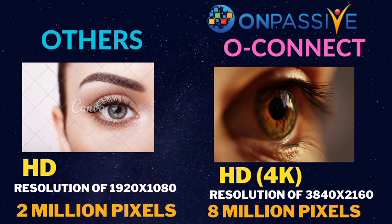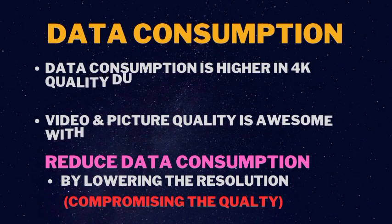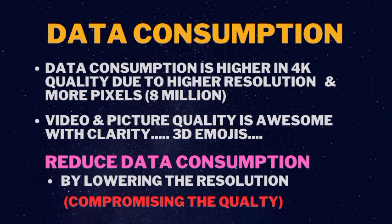Now, we'll talk about the data consumption. Data consumption is higher in 4K quality due to higher resolution and more pixels — 8 million. Moreover, OnPassive video and picture quality is awesome with clarity because of this resolution and number of pixels. And OConnect is using 3D emojis and many more features. That's why data consumption is more. And how to reduce the data consumption? You can lower the resolution while streaming — it will consume less data. But you are compromising the quality, my dear friend.